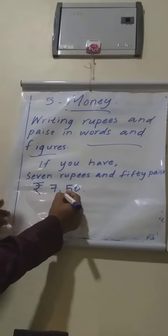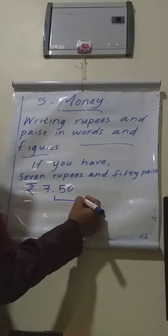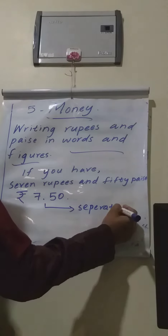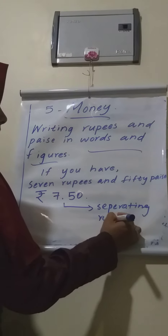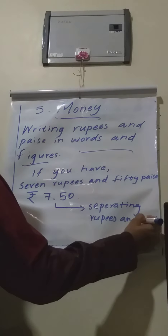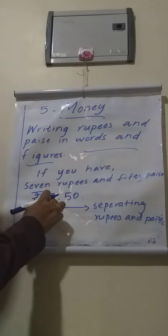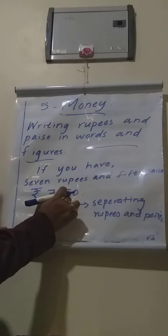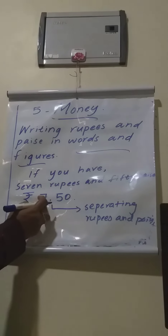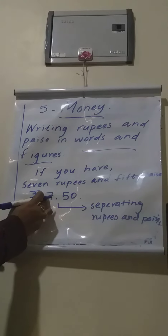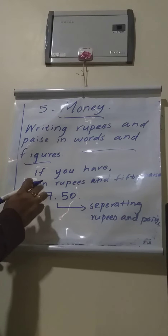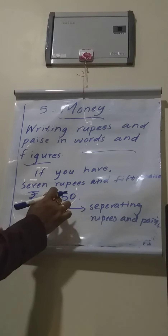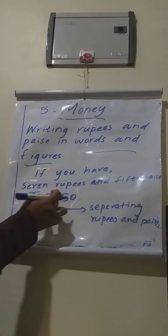Are you clear? This dot denotes separating rupees and paisa. The right side number denotes paisa — this 50 denotes paisa. And this dot's left side number is 7, that denotes rupees. This dot separates rupees and paisa: this side is for paisa and this side is for rupees.